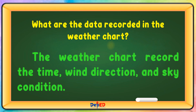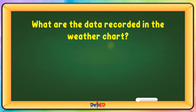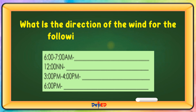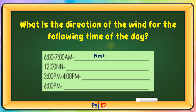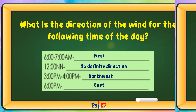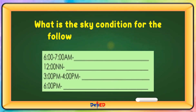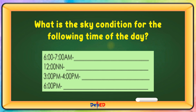What is the direction of the wind for the following times of the day? 6 a.m. to 7 a.m.: west. 12 noon: no definite direction. 3 p.m. to 4 p.m.: northwest. 6 p.m.: east. What is the sky condition for the following times of the day? 6 a.m. to 7 a.m.: clear or sunny. 12 noon: clear and sunny. 3 p.m. to 4 p.m.: mostly sunny. 6 p.m.: mostly cloudy.